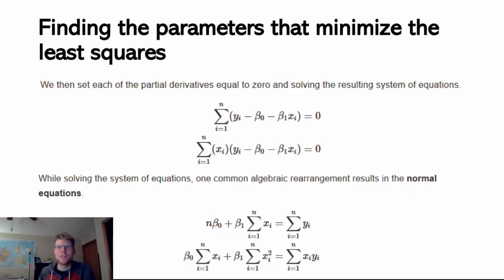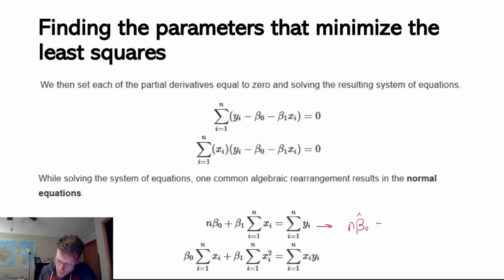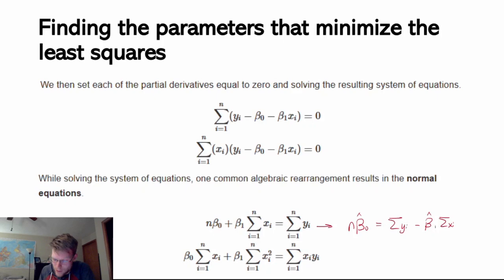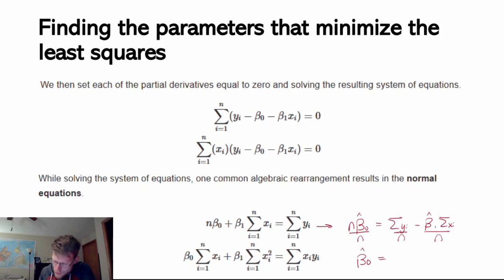The strategy for each parameter is a little bit different. Solving for beta 0 is simpler, and I wind up with an equation in terms of beta 1. If I take the equation and isolate beta 0, I get n times beta hat 0 equals the sum of y sub i minus beta hat 1 times the sum of x sub i. Dividing both sides by n, and recognizing that the sum of y sub i over n is y bar, and the sum of x sub i over n is x bar, I can simplify to: beta hat 0 equals y bar minus beta hat 1 times x bar.